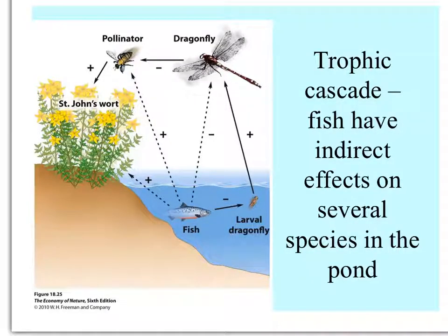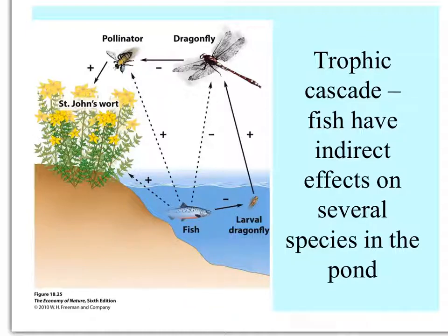People draw interaction diagrams in many ways, but here is a creative example of a trophic cascade where fish have potential beneficial effects on pollinators. How? Not by jumping out of the water to lick nectar — rather, fish nutrients trickle up and enhance plant productivity, and fish also eat larval dragonflies, decreasing their numbers. With fewer dragonflies, there are more pollinators. So fish benefit pollinators indirectly, and more pollinators mean more pollination, which benefits the plants too.